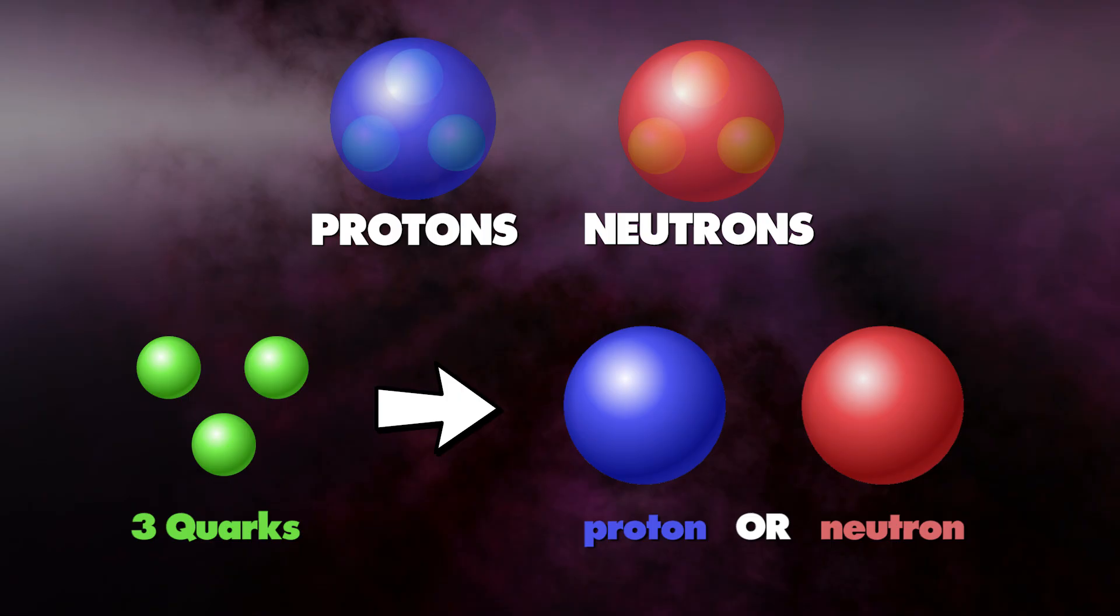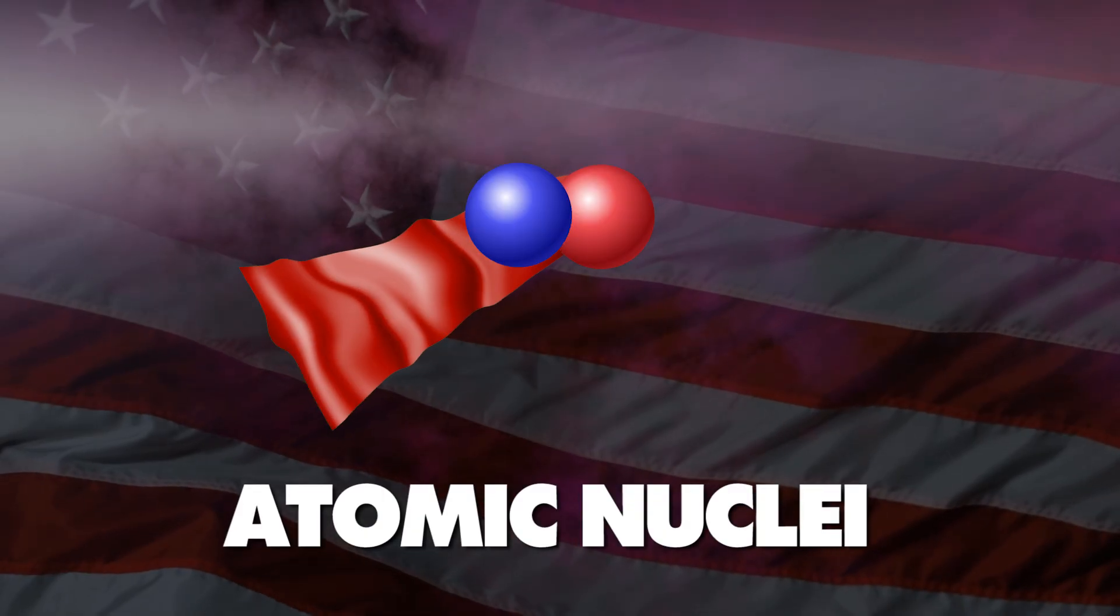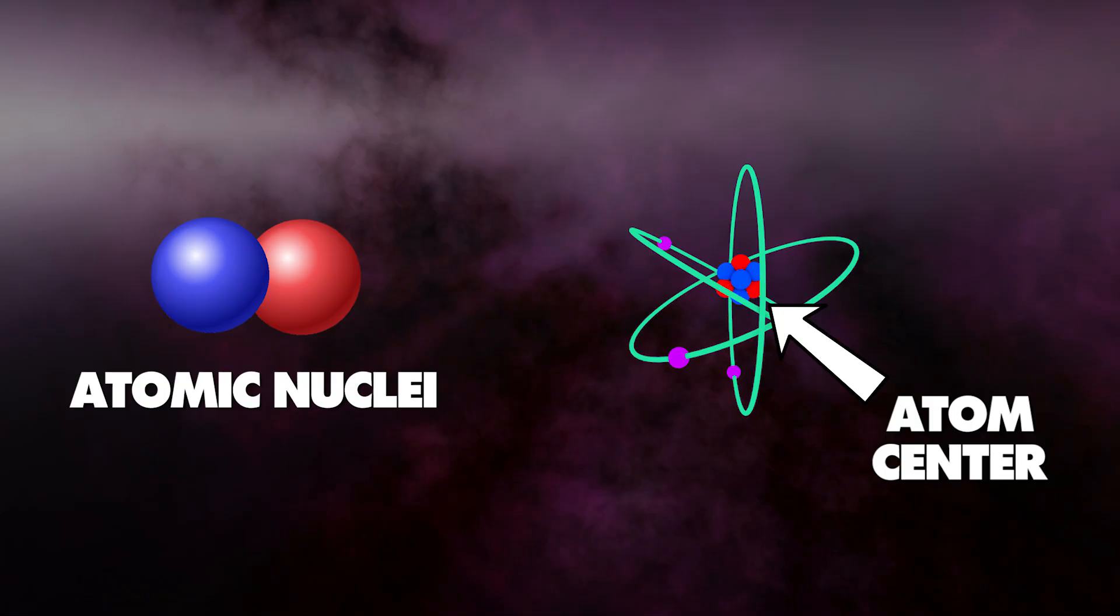At this stage, protons and neutrons, which are formed from the quarks we just made, start coming together too. When this happens, we get atomic nuclei, which is just a fancy name for the centre of an atom.